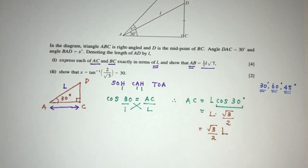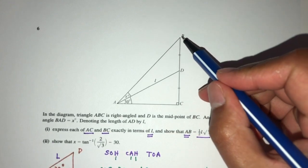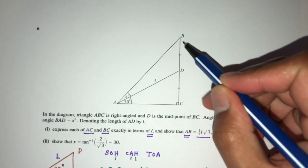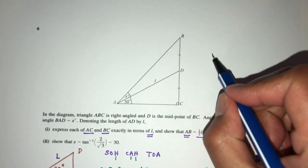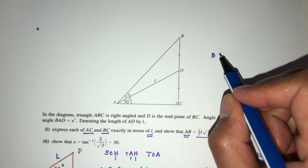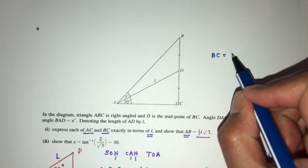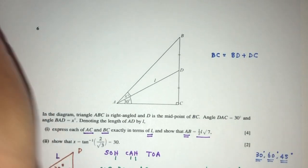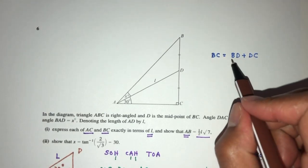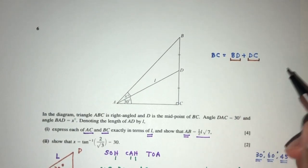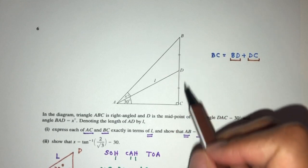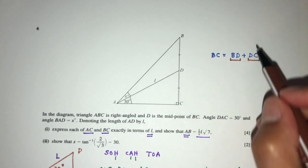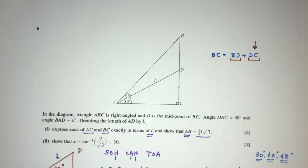Now for part two we have to find the value of BC. BC is this big length. By observation we know that BC equals BD plus DC. We understand that BD and DC are the same, so we can just find DC first and then multiply by 2 to get BC.